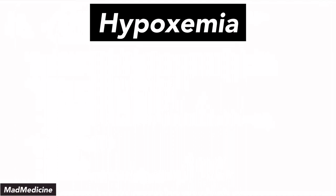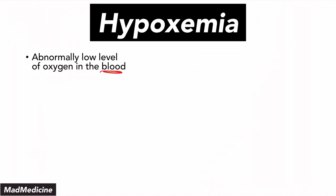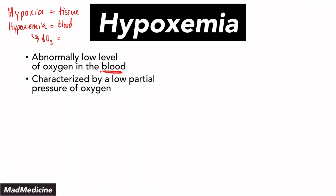Hypoxemia is a state in which you have abnormally low levels of oxygen in the blood. Remember, hypoxia is the overall theme at the tissue level. When you go a little deeper, hypoxemia is at the level of your blood — you have decreased O2 in the blood. Hypoxemia is characterized by a low partial pressure of oxygen in the blood, so your PaO2 is going to be low.